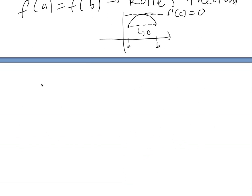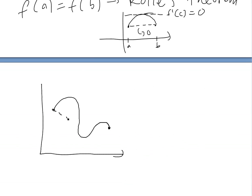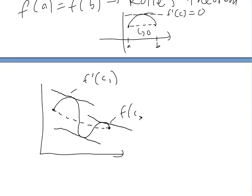Also, if you have another function that kind of goes like this — if it goes something like this — this would actually have, if this is again the average slope, you'll actually have three of them. Three points with that average slope: this would be f prime of c1, this is f prime of c2, and this is f prime of c3, and these are all equal to the average slope m.